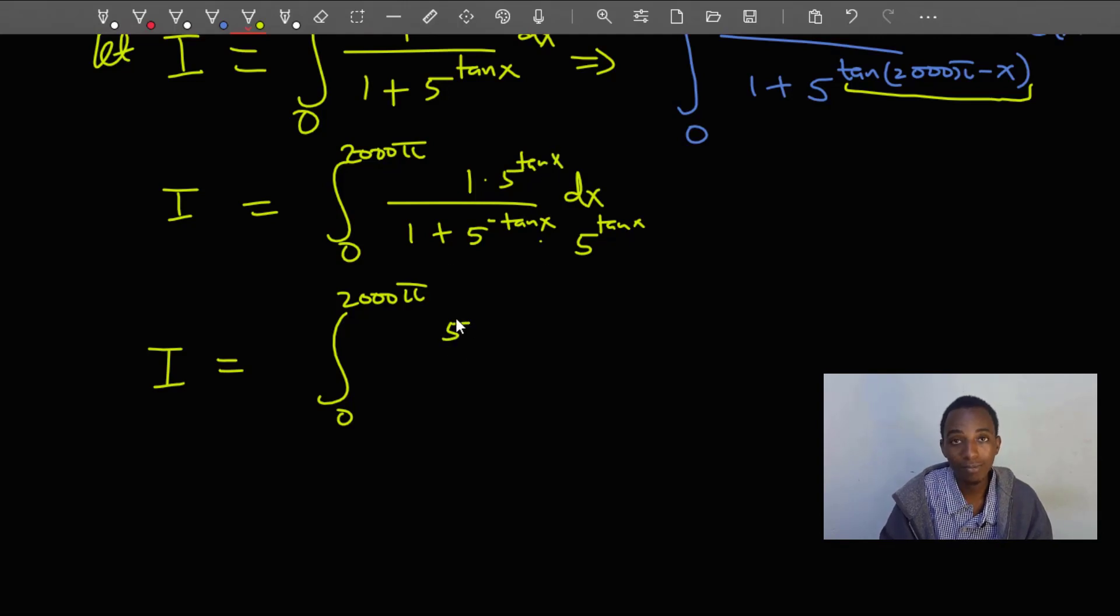On the numerator I have 5 to the power tan x. Down here I have 5 to the power tan x plus 1, because this times this. I should put brackets here to make that look more mathematical. That should be a 1 here with respect to x.